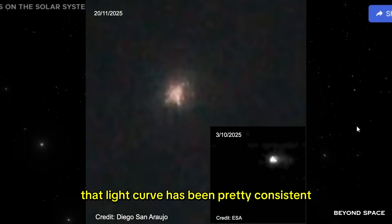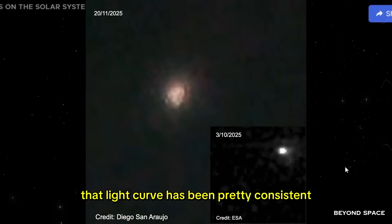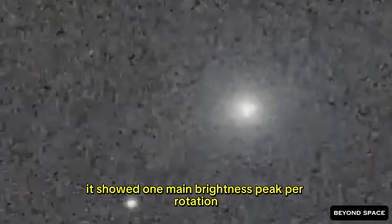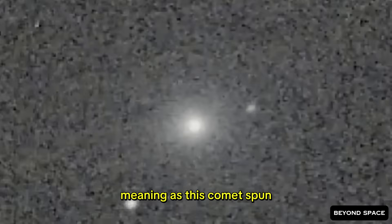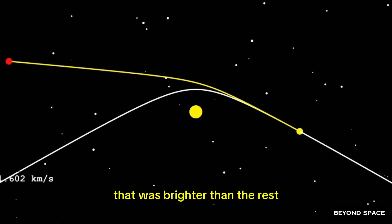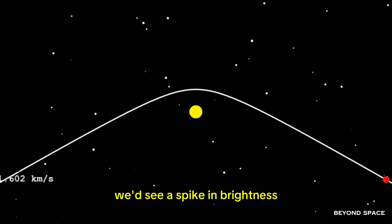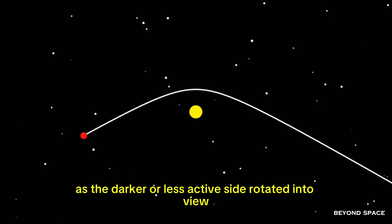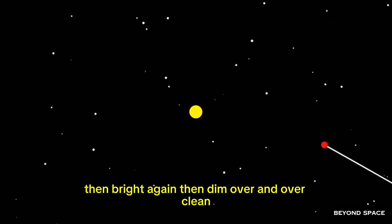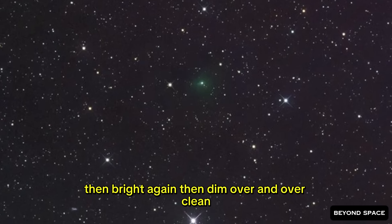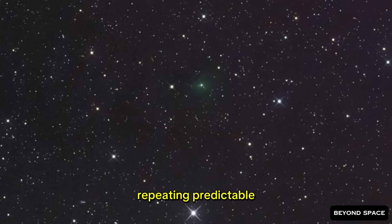For 3i Atlas, that light curve has been pretty consistent. It showed one main brightness peak per rotation, meaning as this comet spun, there was one part of it that was brighter than the rest. Every time that part came around to face us, we'd see a spike in brightness. Then it would dim as the darker or less active side rotated into view, then bright again, then dim, over and over - clean, repeating, predictable.